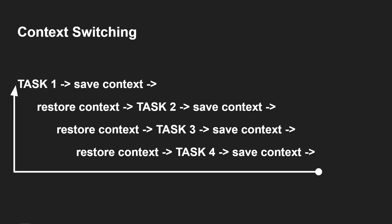Here is a little diagram showing that we've got task one. When you move away from task one, you save the context. You then restore the context for task two — it runs a little bit, you save that context, you restore the context for task three, it runs a little bit, you save that context, you restore the context for task four, you save that context, and then you go back up to task one where you restore the context again, and keep going around in a circle.